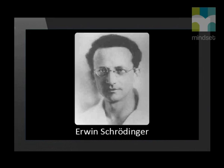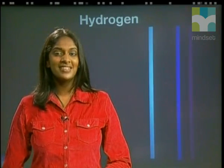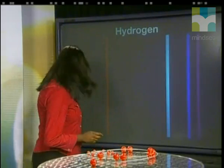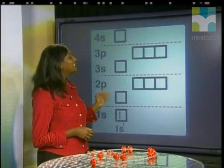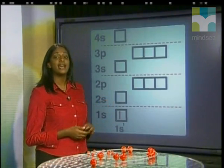However, a new atomic model was developed using wave and quantum mechanics. Although this model was based on very different ideas, it still retained many of the principles established in earlier models. The simplest way of representing this new atomic model is by looking at an energy level diagram.